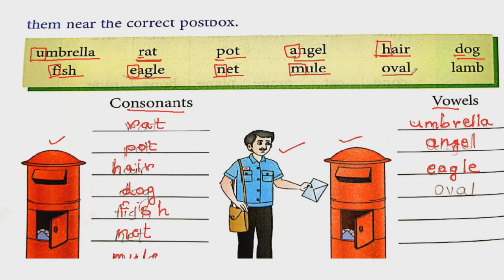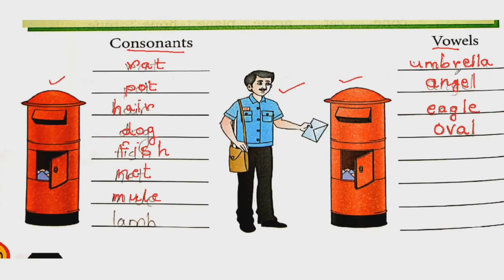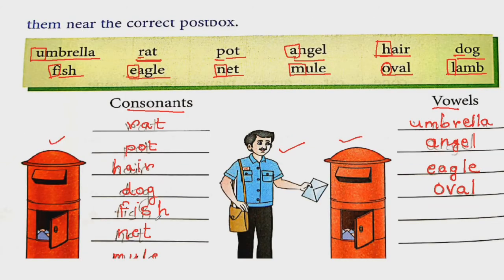Oval, O, V, A, L. O is vowel, so write it in vowel post box. And last word is lamb. Here L is consonant, so write it down in consonant post box. So these are the vowels and consonant post boxes. Now it will help the postman to deliver the letters properly.